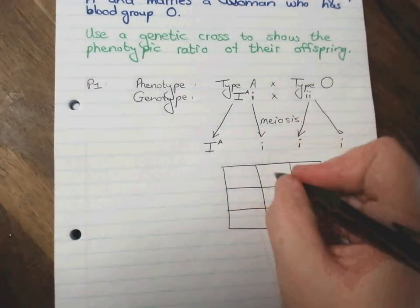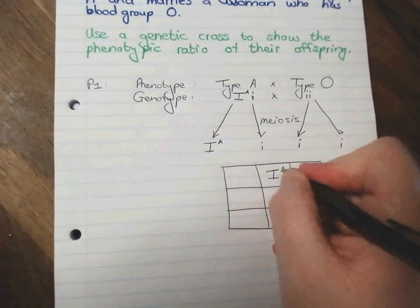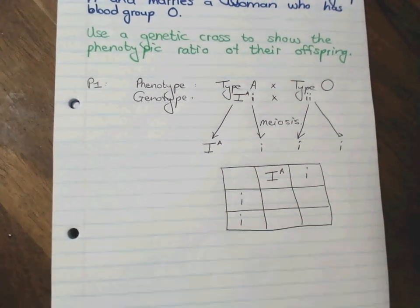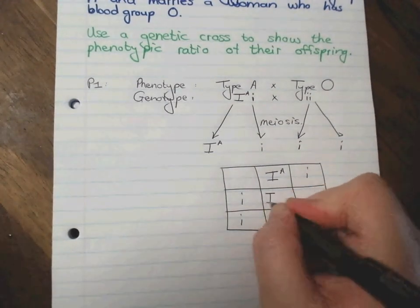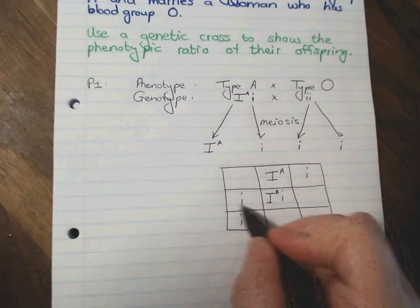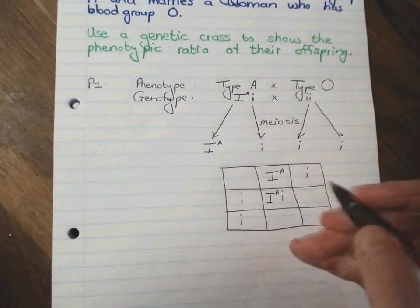Okay, so first parent goes over there, second parent goes over there. And then comes the fun part where we just put the alleles together. So one allele from there and that allele from there, and there where they cross, we put the two together.